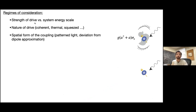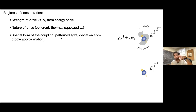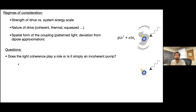Key open questions for the field: how strong should the drive be — vacuum or classical states — relative to the system energy? Does the form of the drive matter — coherent, thermal, or squeezed? Can the statistics of light, such as squeezed photons, induce electron pairing? What is the appropriate coupling form for itinerant electrons where the dipole approximation may break down? Will light coherence play a role, or is an incoherent pump sufficient?